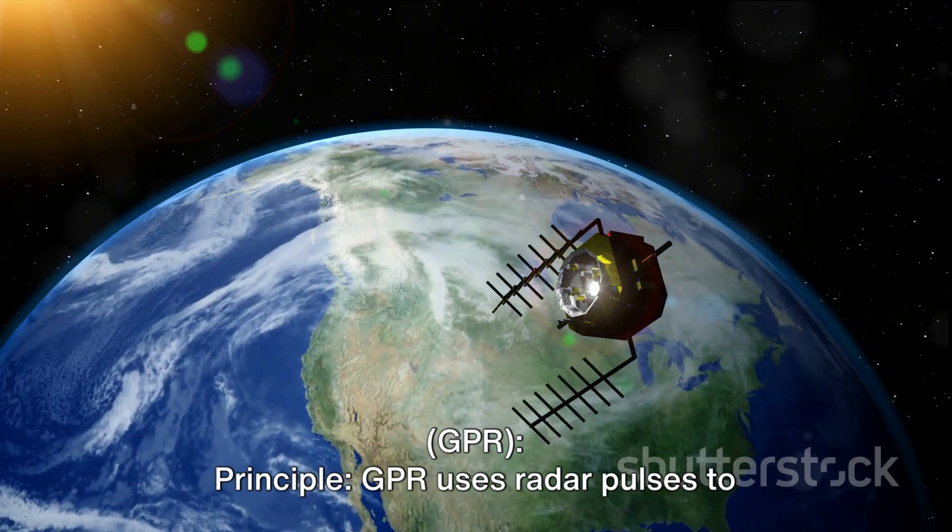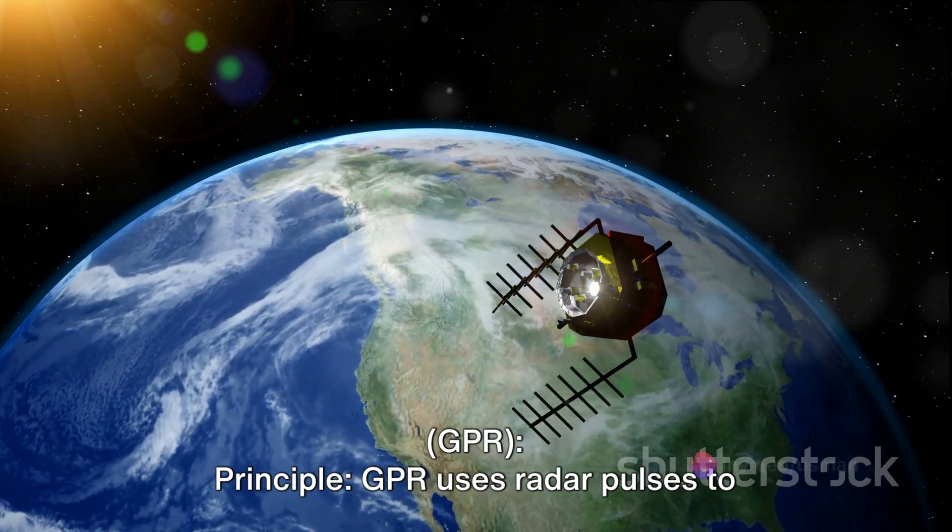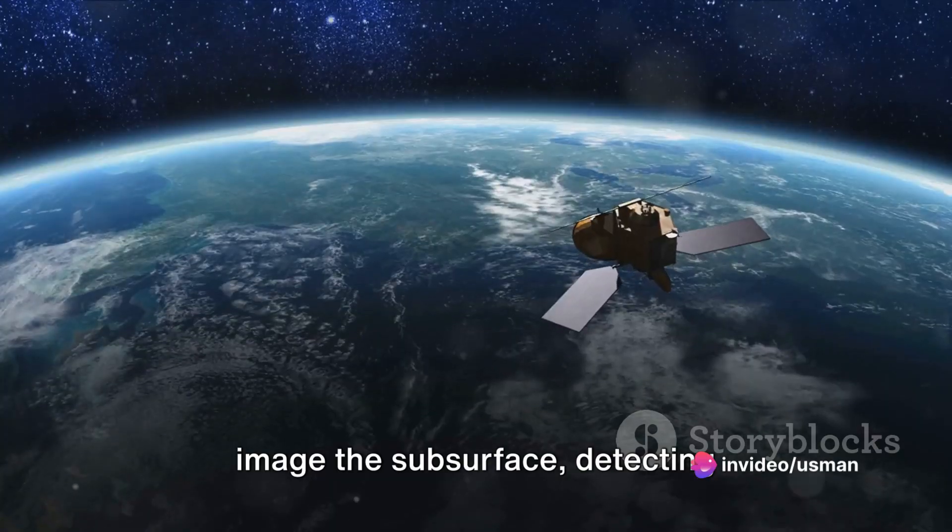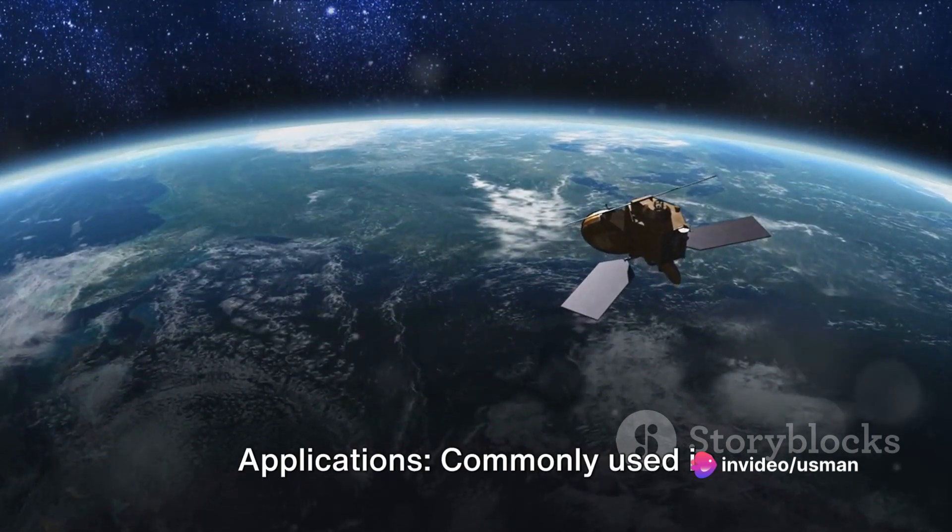Ground penetrating radar (GPR). Principle: GPR uses radar pulses to image the subsurface, detecting reflections from interfaces between different materials.